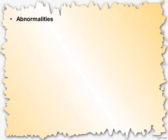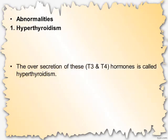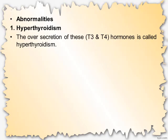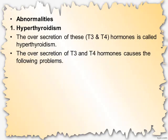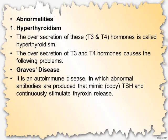Abnormality number one: hyperthyroidism. The over-secretion of both T3 and T4 hormones is called hyperthyroidism. One cause is Graves' disease, which is an autoimmune disease in which abnormal antibodies are produced that mimic thyroid stimulating hormone and continuously stimulate thyroxine release.